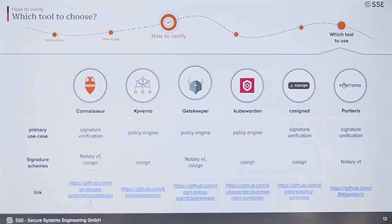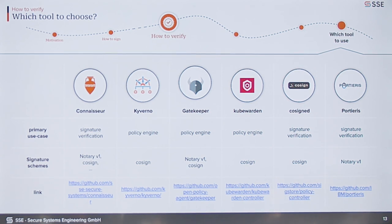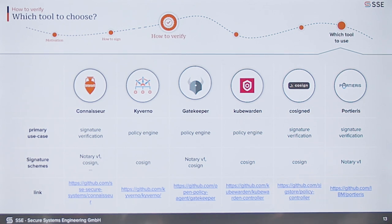That's the whole process of pretty much all the admission controllers that try to solve image verification. There are a few of them — I listed some of them here, though this is not a complete list. Which one you actually use depends on your use case: do you just want image verification or do you want to do a bit more? It also depends on what kind of signature scheme you want to use. If you want to use Notary, maybe Kyverno isn't a good solution because Kyverno, to my knowledge, doesn't support Notary's signature scheme.